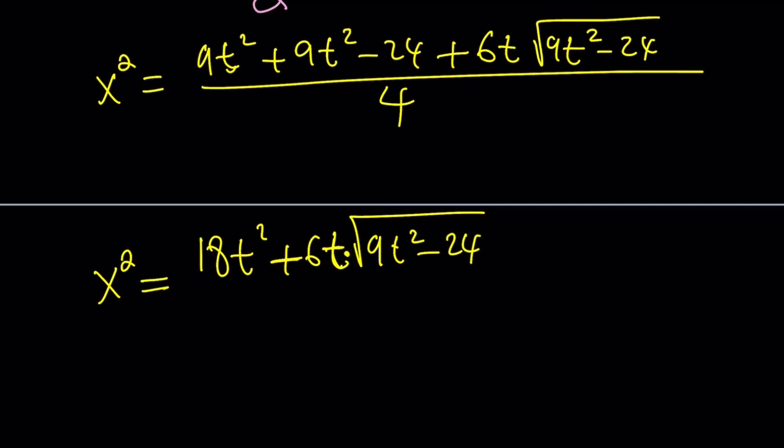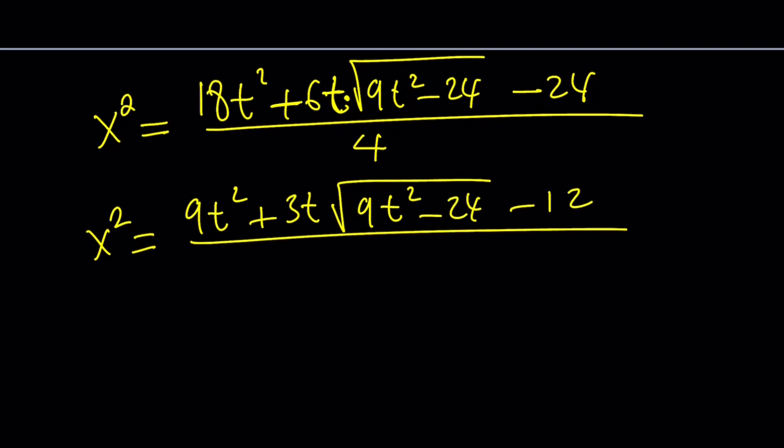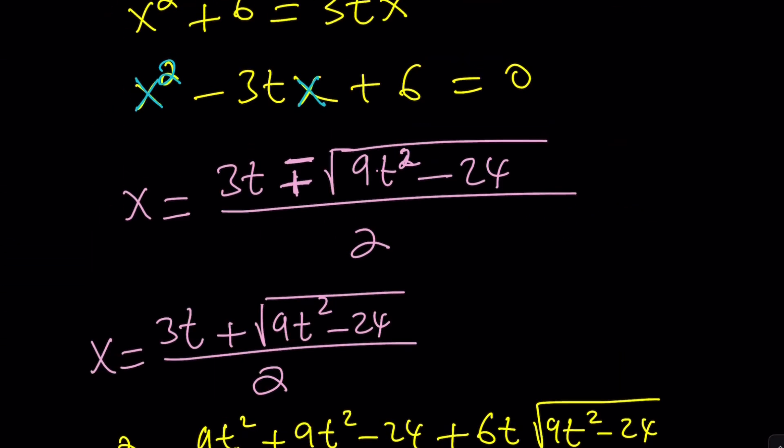18t squared plus 6t times this expression right here. That's a t, not a plus sign. Be careful with that. Try to make it a little different. Minus 24, and then minus 24 outside, divide by 4. You can divide by 2, which is not a huge improvement, but still works a little bit. 9t squared plus 3t minus 12, and all of that is divided by 2. You can even go as far as 9 halves, so on and so forth, but no big deal. That's not necessary.